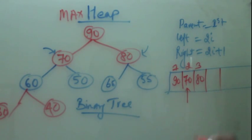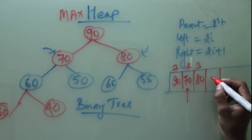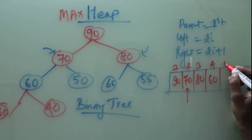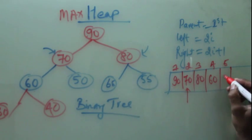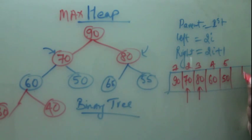Then this will be the next parent. For 70, 60 is left, 2 into 2 is 4. Fifth element will be 50. Then we will move to 80. For 80, 65 will be the left child, 55 will be the right child. Then we will come to 60. For 60, 30 will be the left child, 40 will be the right child.